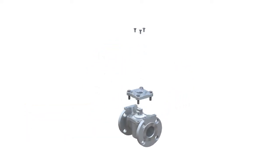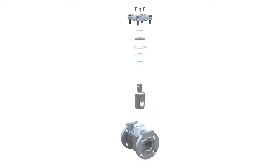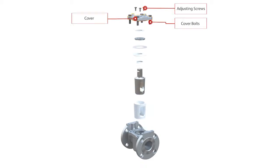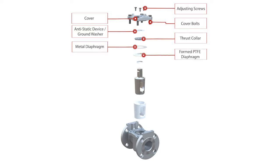The complete bill of material of a standard Zomox sleeved plug valve contains the adjusting screws, cover and cover bolts. The top seal is comprised by the anti-static device, thrust collar, metal diaphragm, PTFE membrane, and PTFE wedge ring, followed by the plug, sleeve, and body.